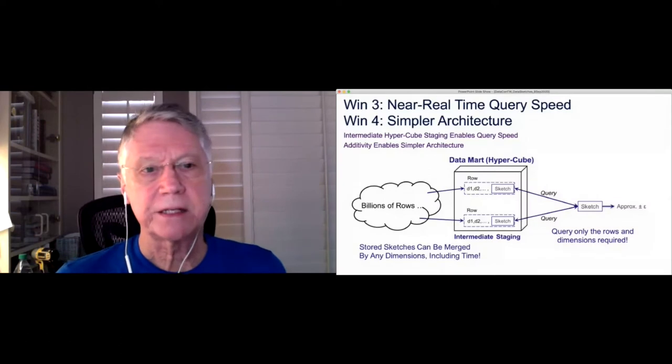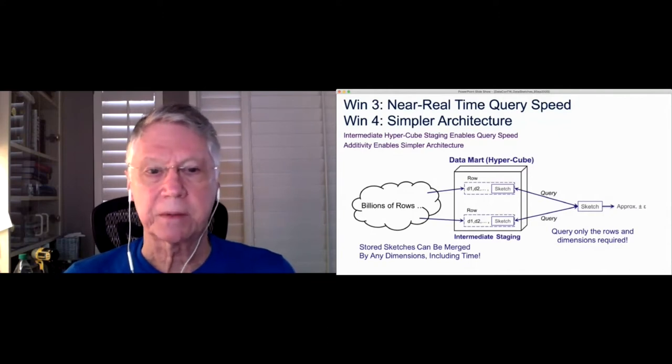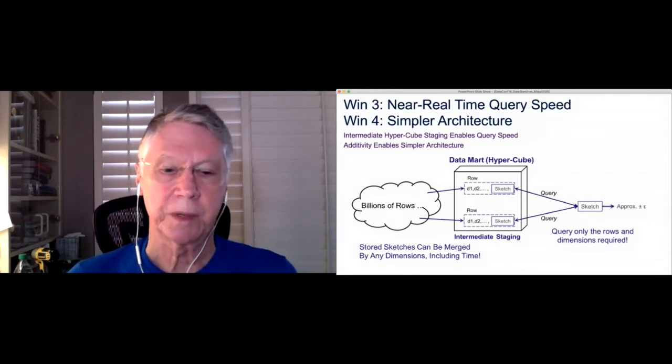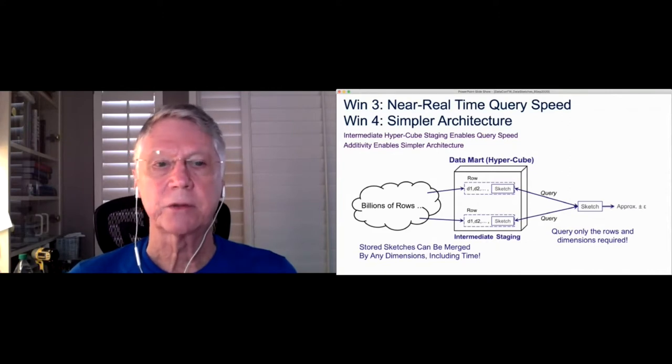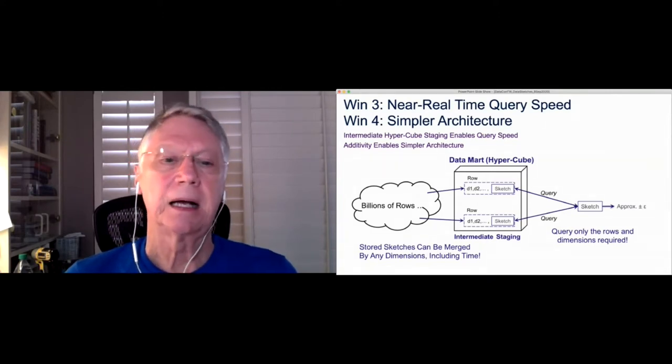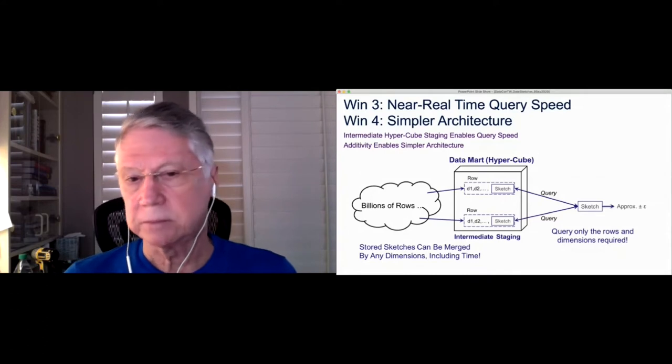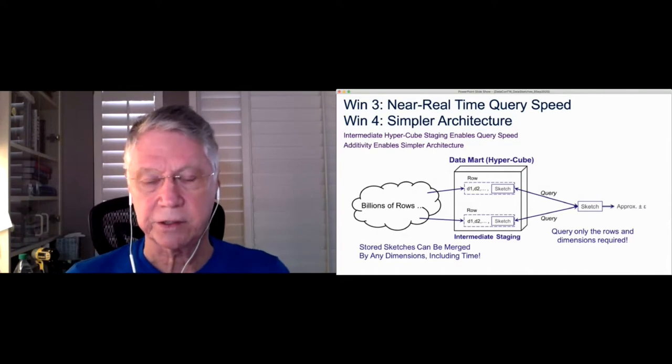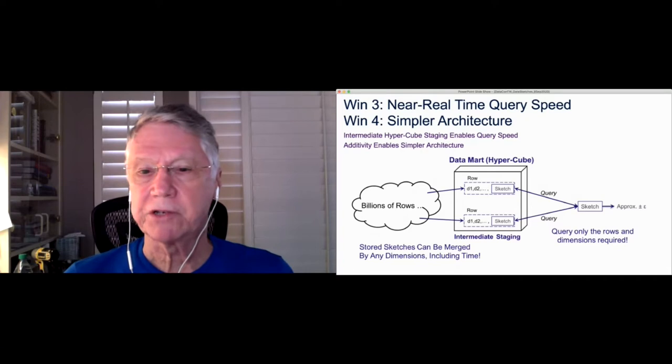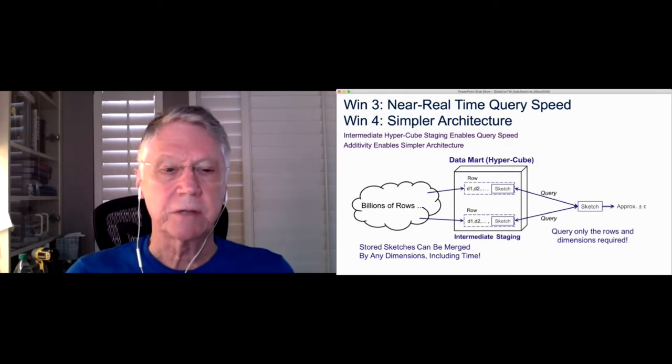The next couple of wins is near real-time query speed. So now if you have a back-end system that produces your sketches, say like on a Hadoop infrastructure, produces the sketches offline, then those can be stored into a Datamart or Hypercube database where the sketches are small enough to be stored as elements in a row of a database. Now the query process then chooses the appropriate rows and dimensions that you're interested in for that query, then merges them into the result sketch and produces a result. And this allows a sub-second analysis of queries and achieve near real-time analysis.